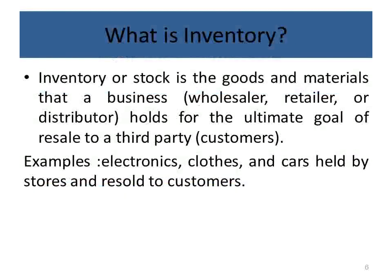Before discussing the first learning objective, it's useful to define what inventory is. Inventory is simply the goods and materials that a business owns — obtained from a wholesaler, retailer, or distributor — kept at their place and sold later to customers at a higher price. For example, inventory can be electronics, clothes, cars, or any other goods a company keeps and sells later. If we take Carrefour as an instance, its inventory includes Pepsi cans, milk, juice, and similar goods.